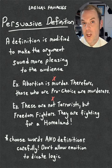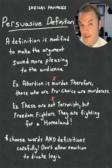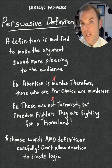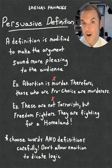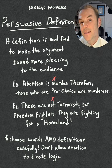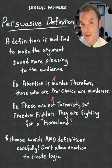Logical fallacies: persuasive definition. A persuasive definition is when the speaker modifies the definition to make it more pleasing to the audience. When it's more pleasing to the audience, they're more likely to agree. However, they're agreeing with an invalid argument.